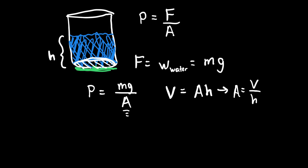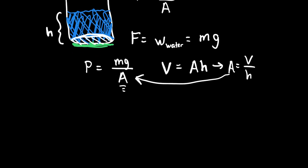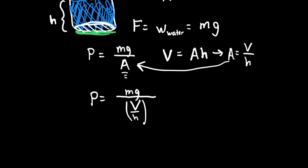My pressure equals mass times gravity divided by volume over height, where volume over height is the area. I don't like fractions divided by fractions, so I can move H up top. I have M times G times H, all divided by volume.